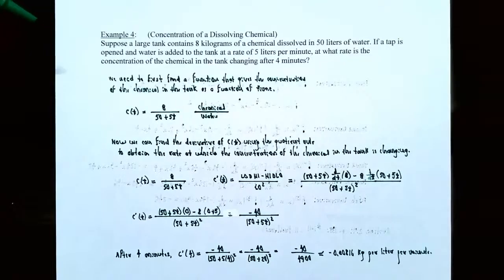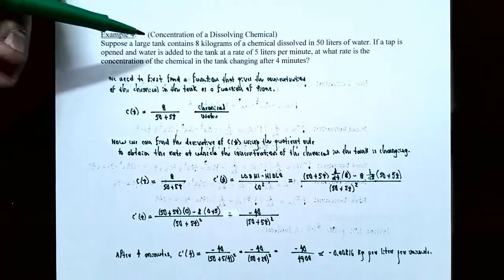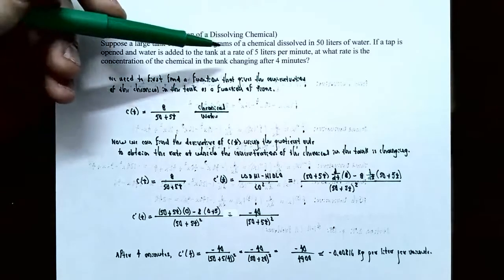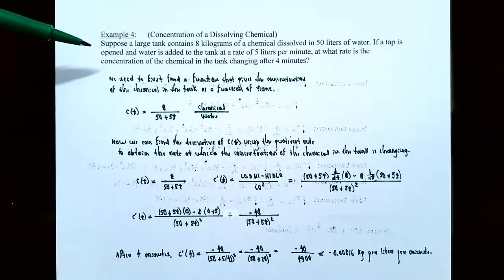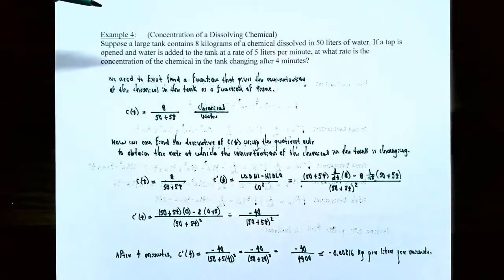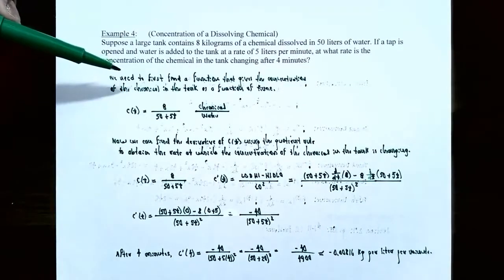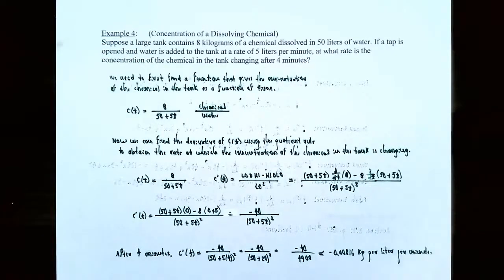Now let's see how the quotient rule can be used in an application. Example 4: the concentration of a dissolving chemical. A large tank contains 8 kg of a chemical dissolved in 50 liters of water. A tap is opened and water is added at 5 liters per minute. At what rate is the concentration of the chemical changing after 4 minutes? We need to find the derivative, but first we need a function for the concentration as a function of time.